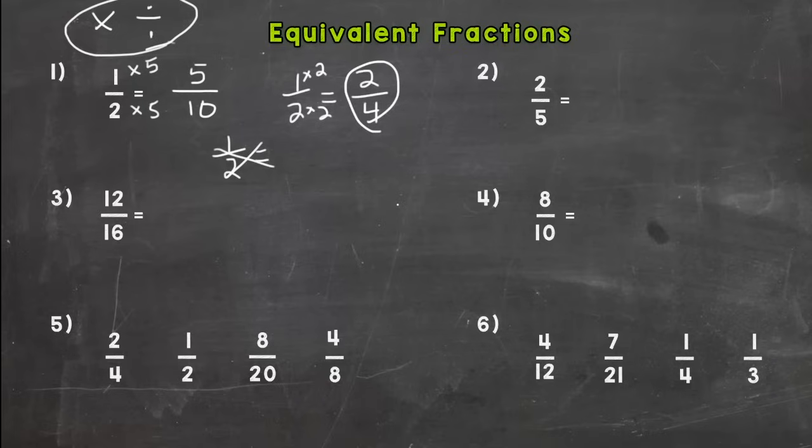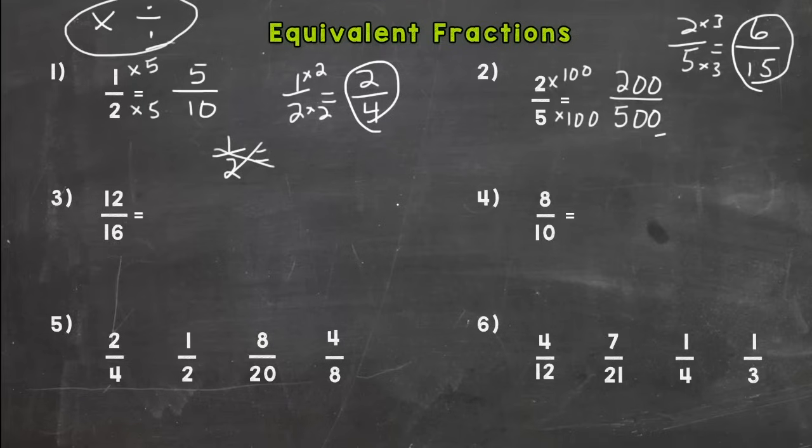So number two, again, whatever you do to the top, you have to do to the bottom. So I have two fifths. I will multiply them both by three. And I will get six fifteenths. Six fifteenths, two hundred five hundredths, and two fifths are all of equal value. They just have different names. That's what an equivalent fraction is.